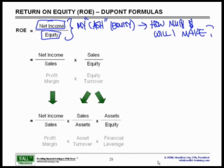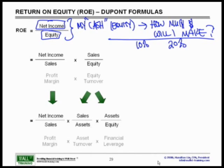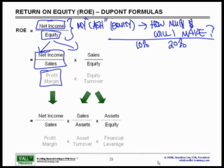Of course, we want this ratio to be as high as possible. However, you'll often see two companies where one has a 10% ROE and another has a 20% ROE. One might say the 20% is doing better, but not necessarily. That's why we split this into what we call the two-step ROE ratio: net income divided by sales — our profit margin — times sales over equity, which is our equity turnover.